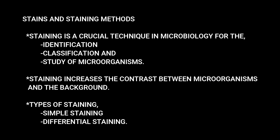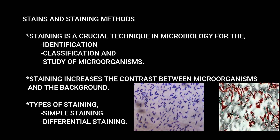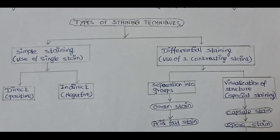Types of staining: simple staining and differential staining — two basic types. Simple staining uses a single stain. Differential staining uses two contrasting stains.